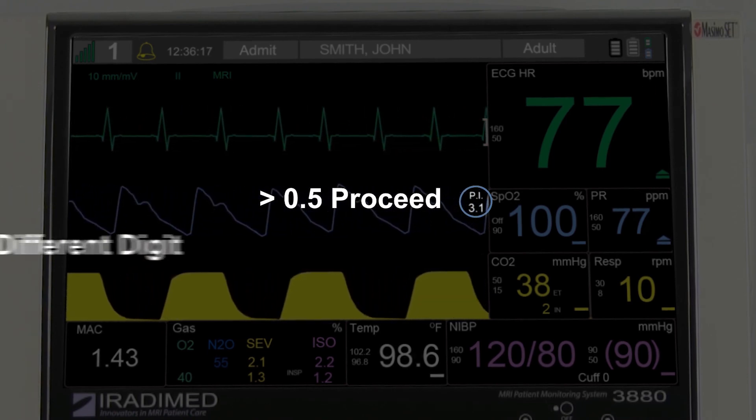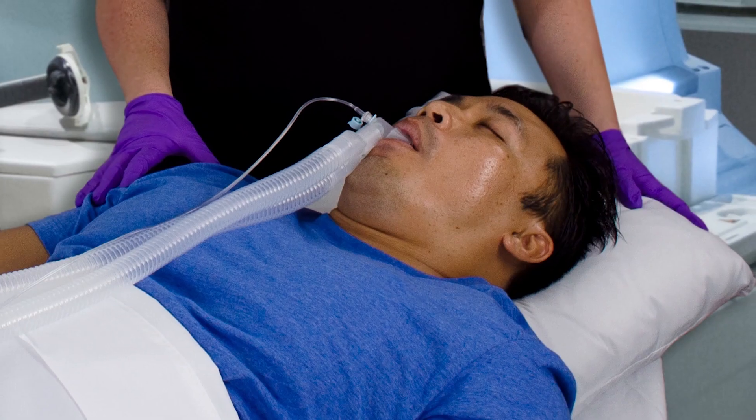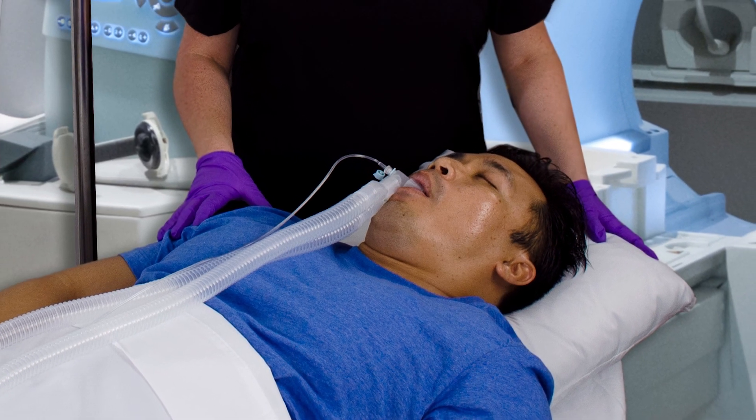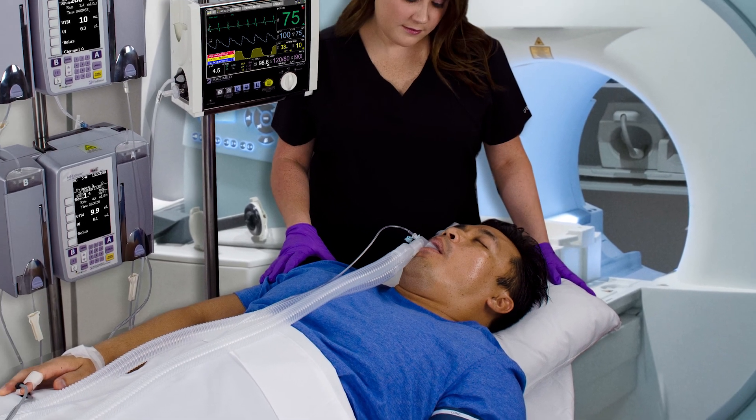If the perfusion indicator is less than 0.5, then select a different digit and proceed to step 2. Before entering the MRI room, also known as zone 4, be sure to place the L-Pod on a blanket or towel to minimize MR vibrations.